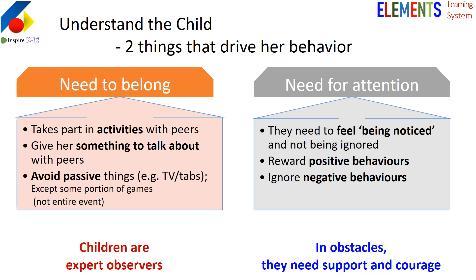Children are expert observers. They may make mistakes in interpreting what they observe, but they do observe. We should praise them — praise helps them feel important and capable. We must support and encourage them when obstacles come. If they don't find support from the adults around, they develop a personality where they either become isolated, lose social skills, or blindly follow the crowd. Their decision-making power and self-confidence are lost or compromised.